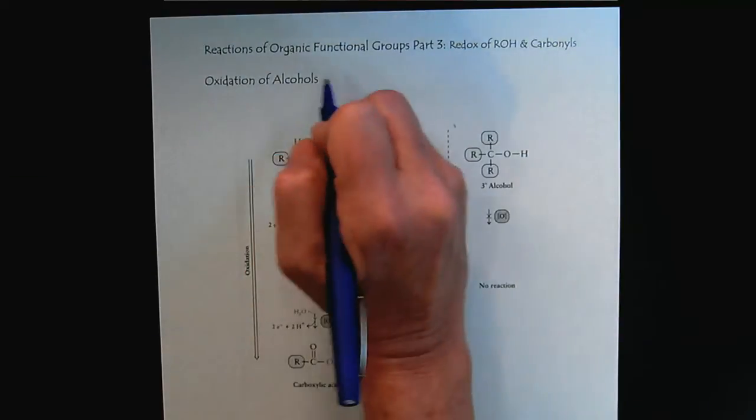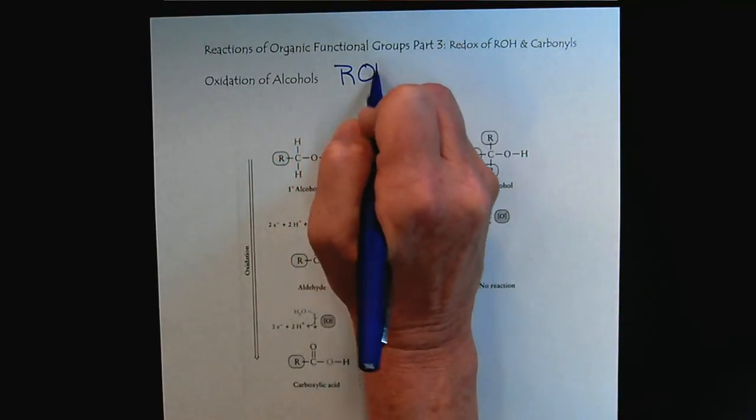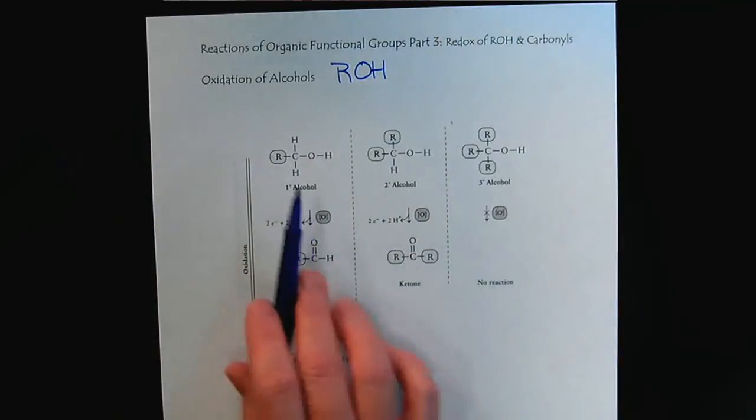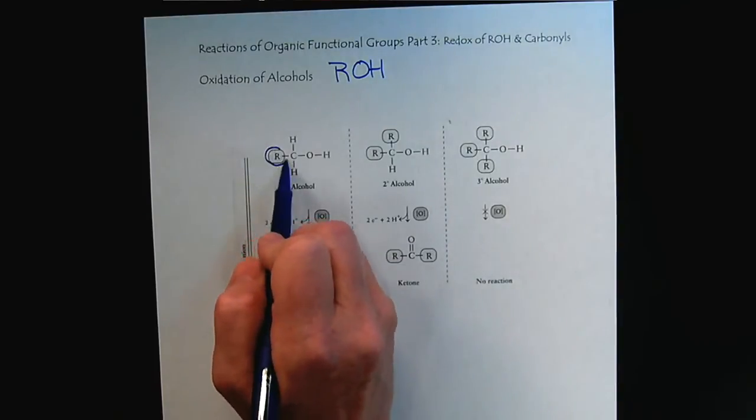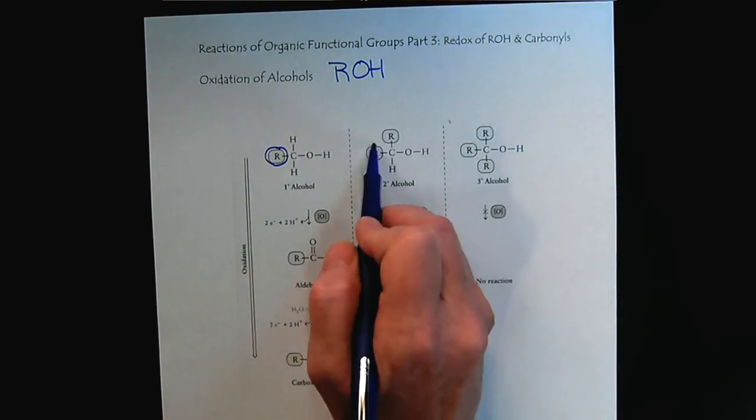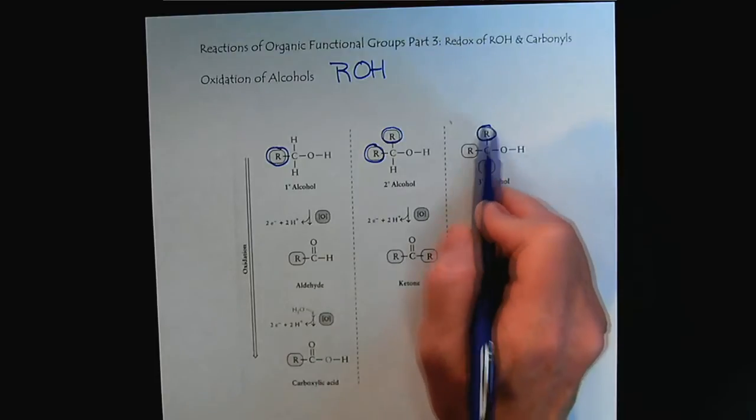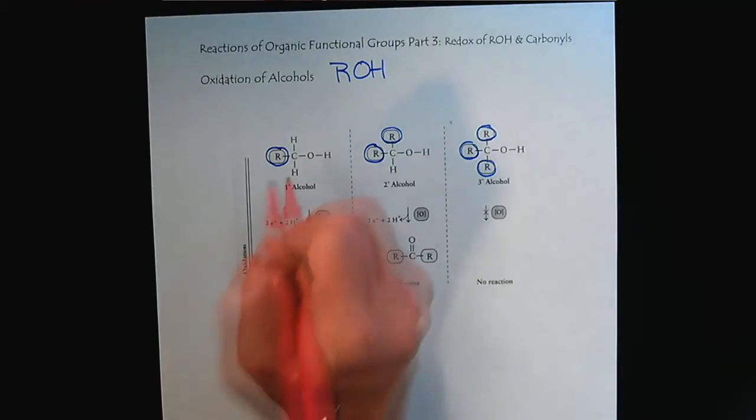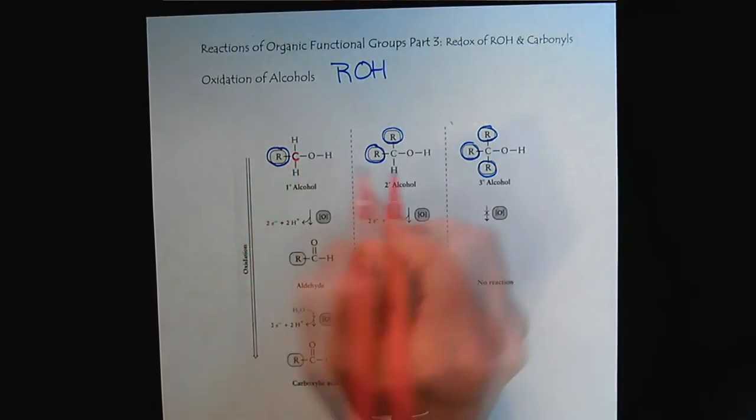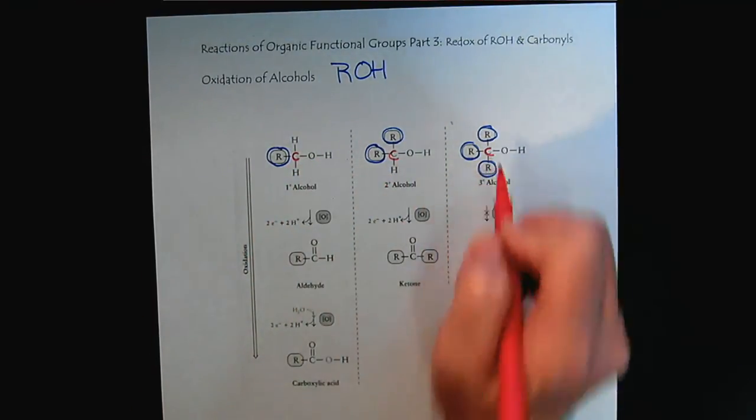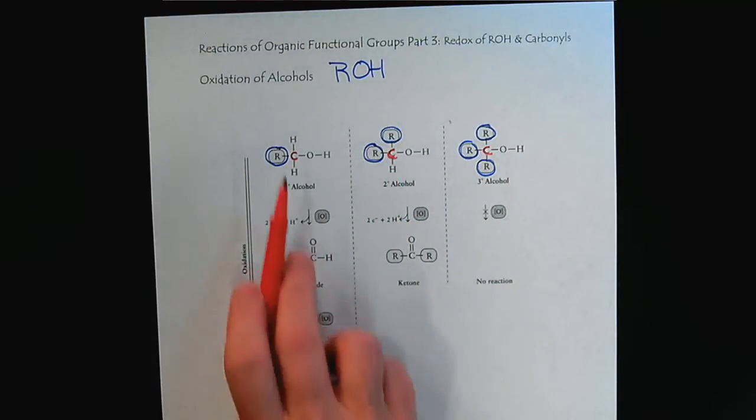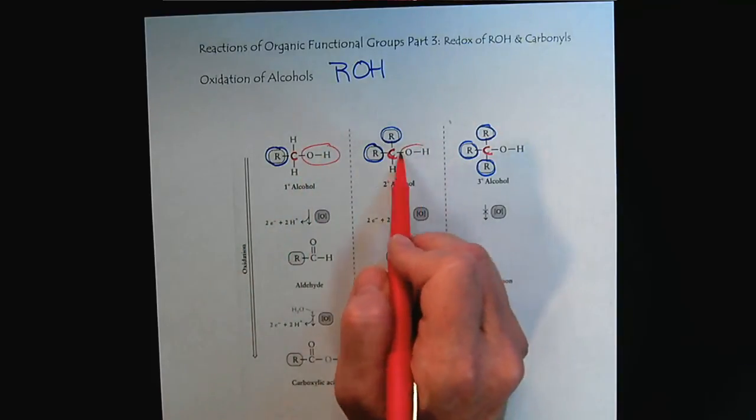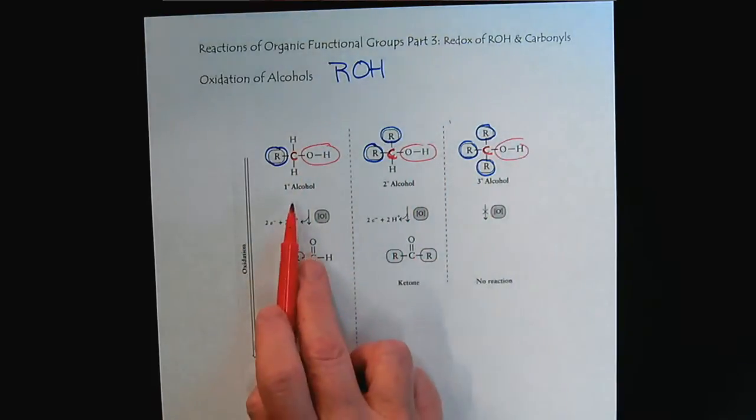Alcohols can be represented by the generic symbol ROH. We know that alcohols can be classified as primary, secondary, or tertiary, depending on the carbon that's bearing the alcohol group. Depending on the number of R groups bonded to the carbon that is holding our alcohol group, we can classify the alcohols.